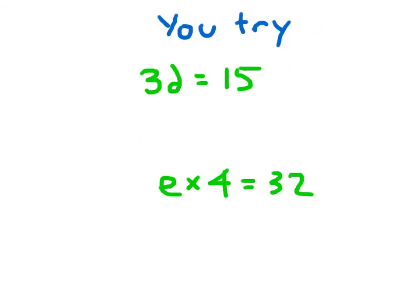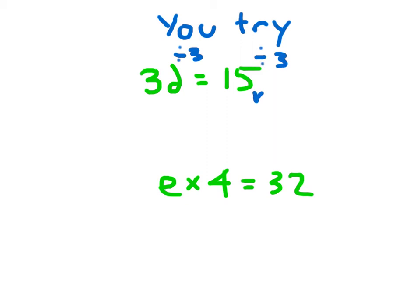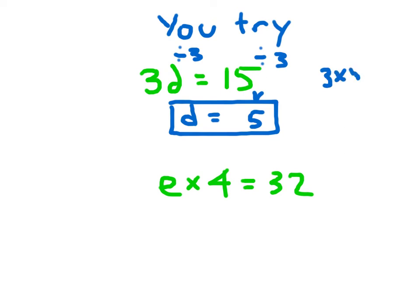Here are two problems for you to try — remember, 3D means 3 times D. Go ahead and hit pause and solve for each variable. For the first one, we divide by 3 on both sides of the equation. 15 divided by 3 is 5, and 3D divided by 3 is just D, so D equals 5. Check: 3 times 5 is 15, and 15 does equal 15.